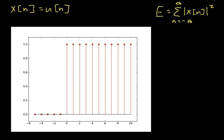When n is less than 0, x(n) is 0 and the magnitude squared is 0. Because the summation terms for n less than 0 are 0, I can rewrite this as a sum from n going from 0 to infinity. When n is between 0 and infinity, x(n) is equal to 1, and 1 squared is equal to 1. So basically what I have is the summation n going from 0 to infinity of 1.